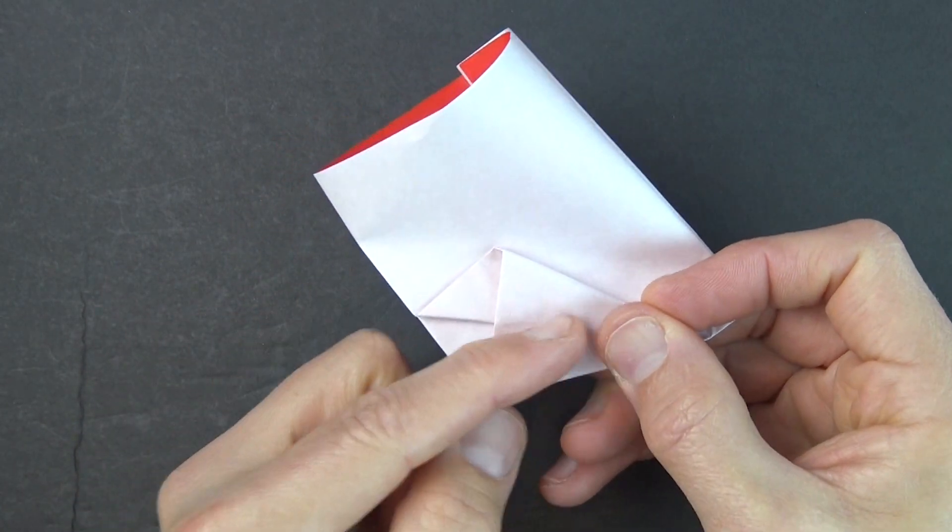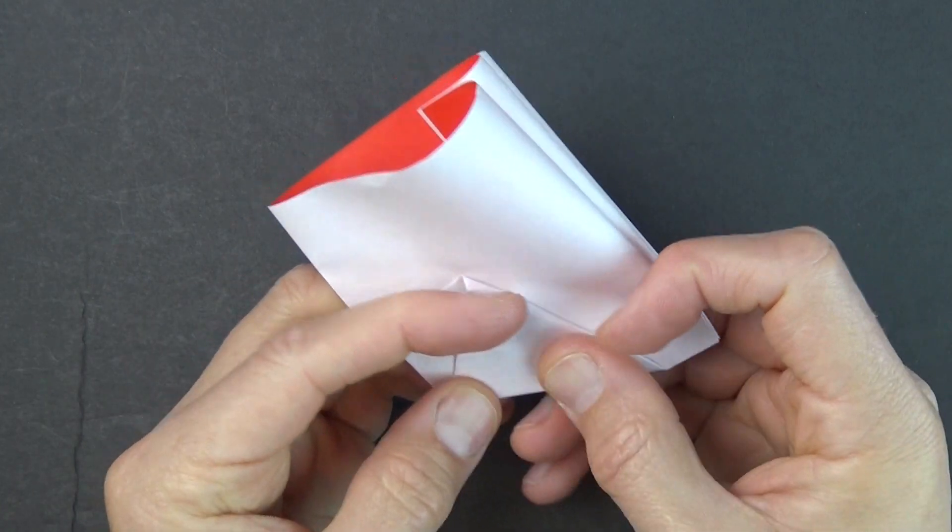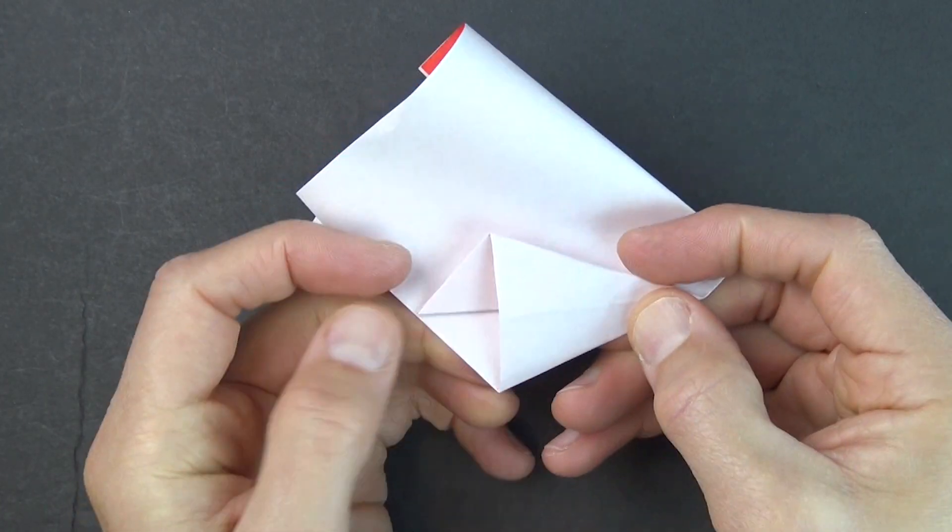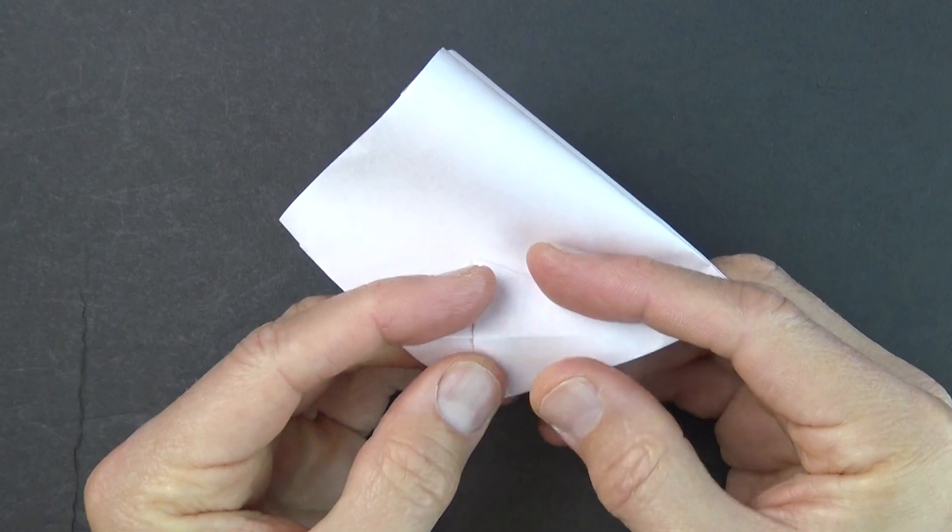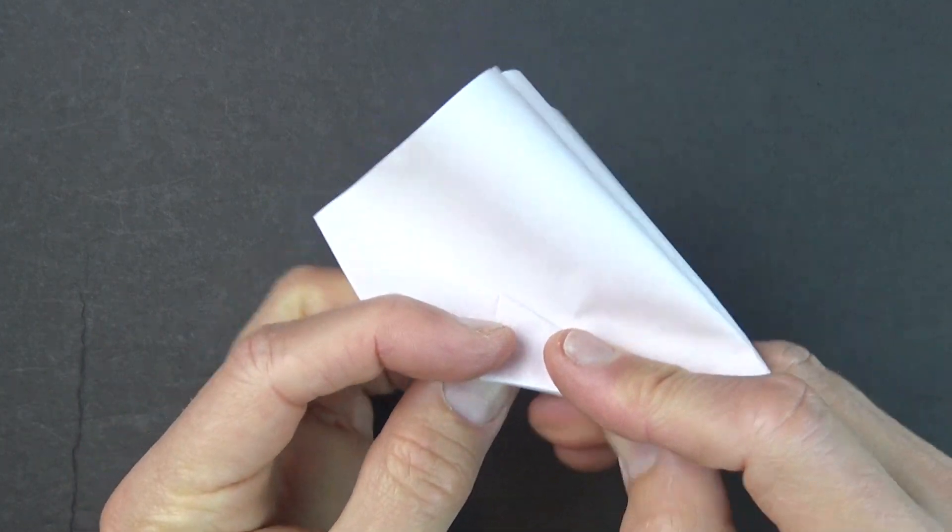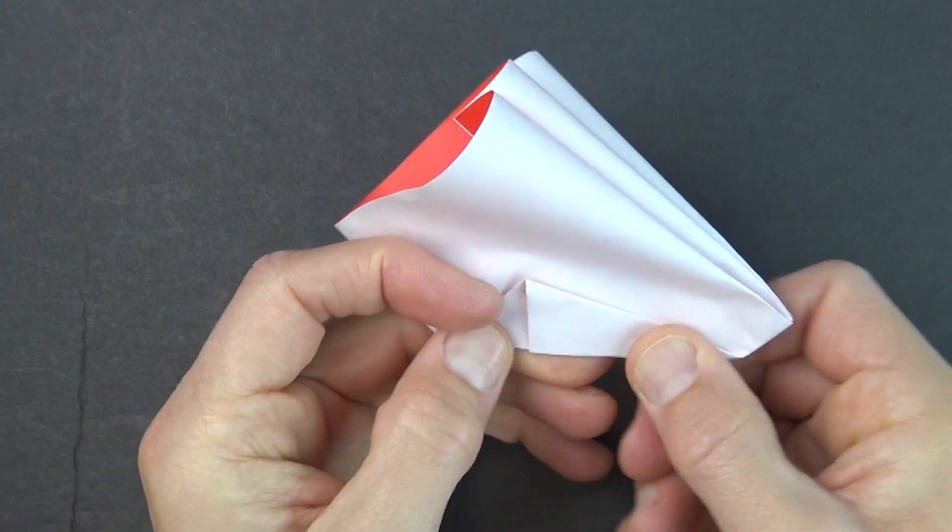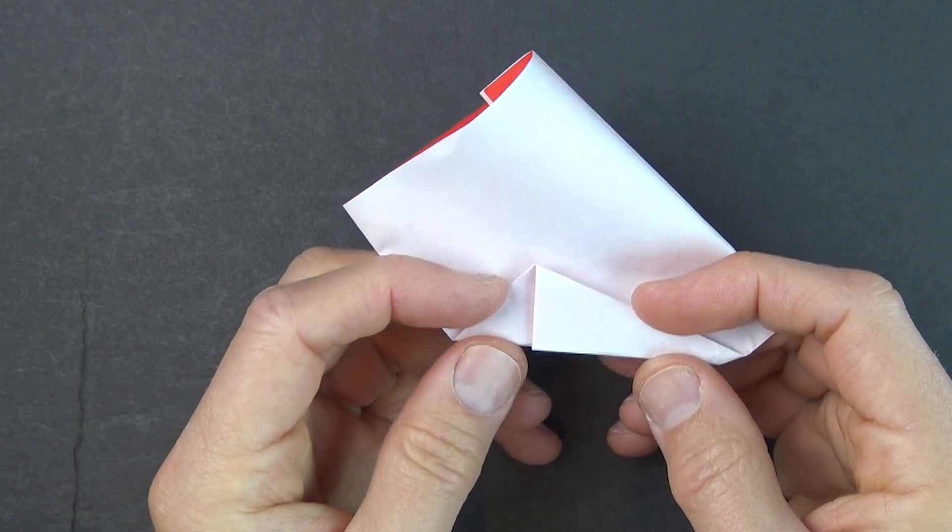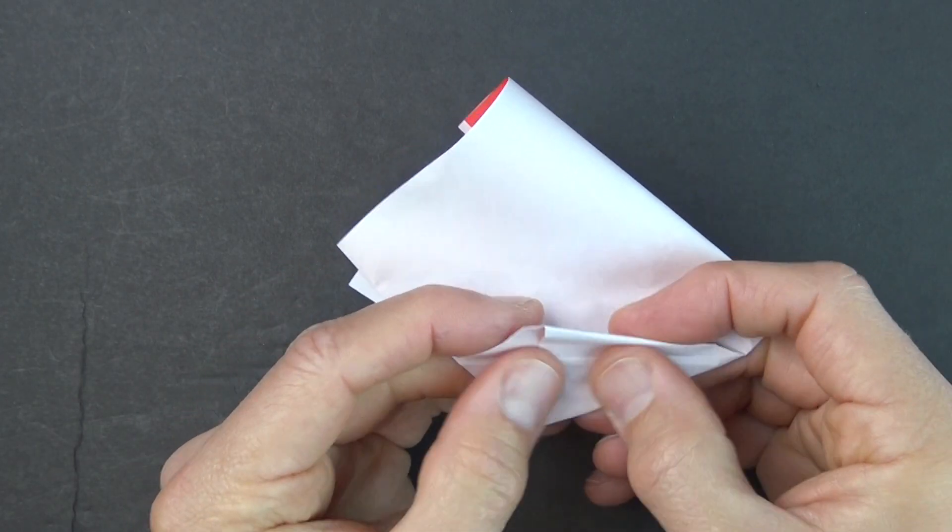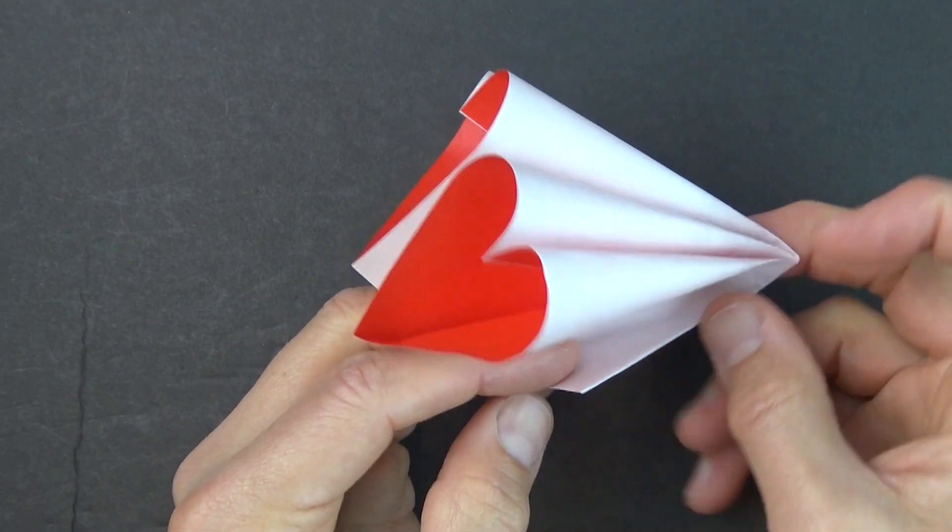So that the crease lands on the edge. And now, fold this flap behind. And bring both of the flaps back. So it's like this. And this is the stand for the hearts.